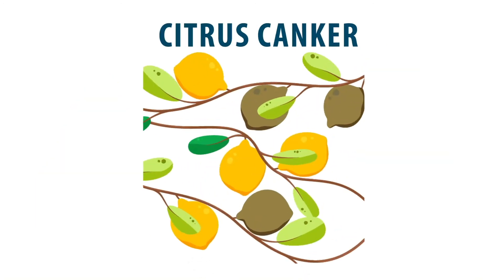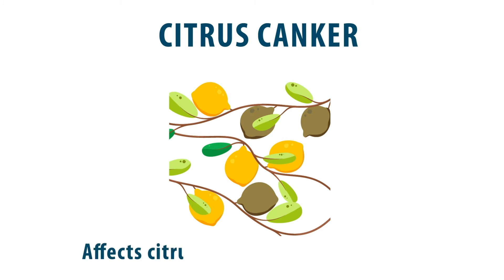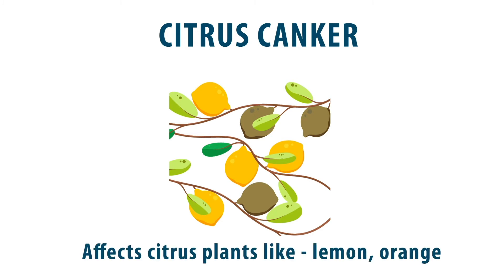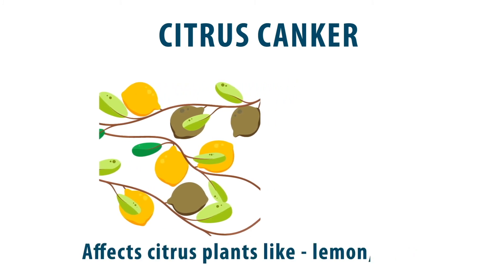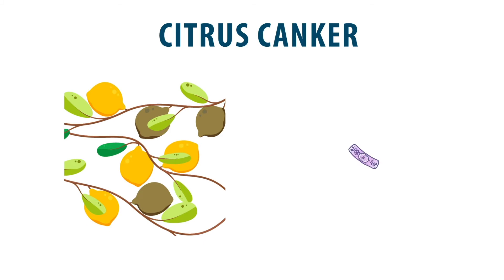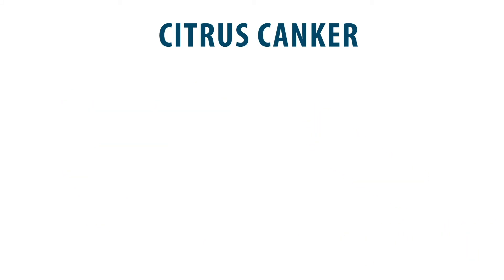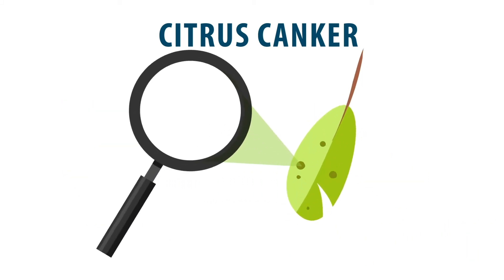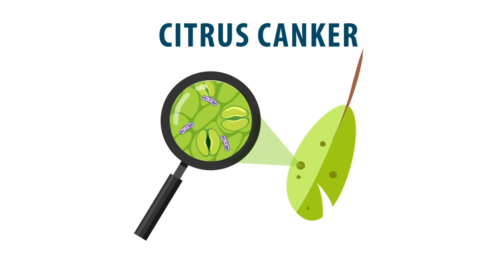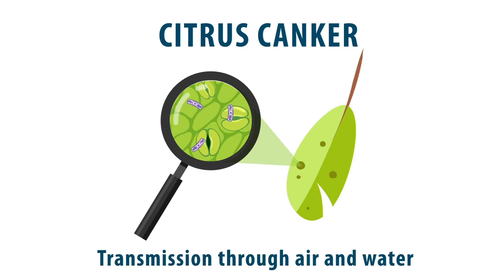Citrus canker, as the name suggests, affects citrus trees like lemon and orange. It is caused by a bacteria that enters through the stoma or cuts in the leaves. The bacteria can then spread by wind and water, hence transmitting the disease to more plants.